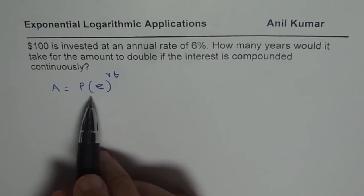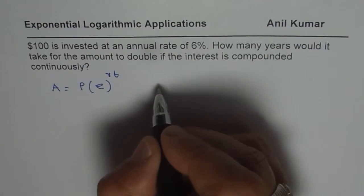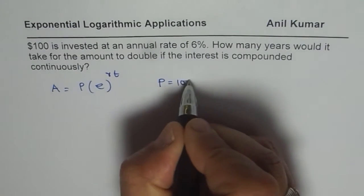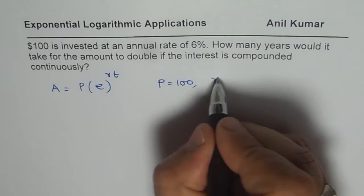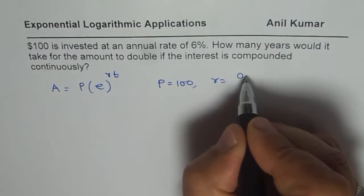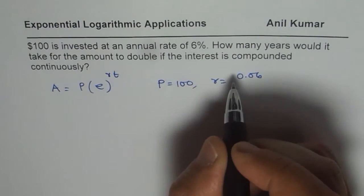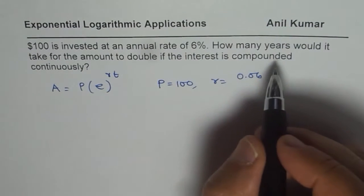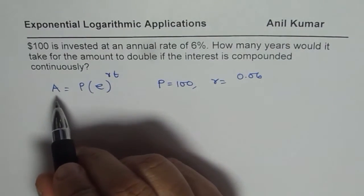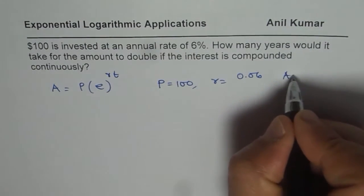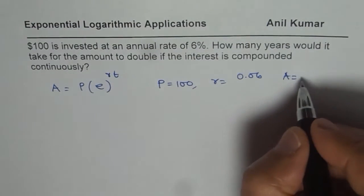Now in this case we know what principal amount is. We know P equals 100. We know R is the rate of interest which is 6%, so it is 0.06. And since it is being compounded continuously and the final amount A we need to find is double, so double means 200.